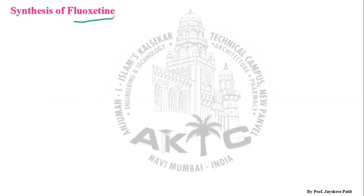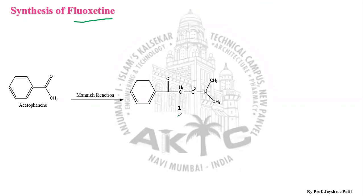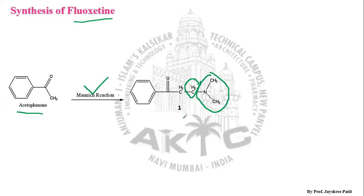Fluoxetine is synthesized starting from acetophenone. Acetophenone undergoes a Mannich reaction in the presence of formaldehyde and dimethylamine. The CH₂ group comes from formaldehyde and the N(CH₃)₂ group comes from dimethylamine. This Mannich reaction involving acetophenone, formaldehyde, and dimethylamine gives Structure 1.